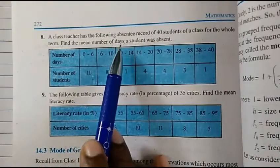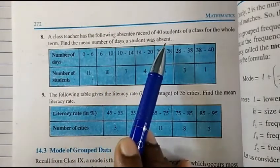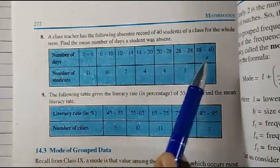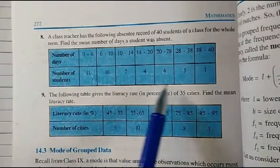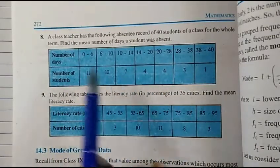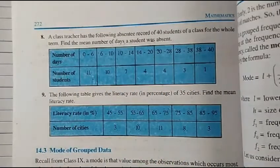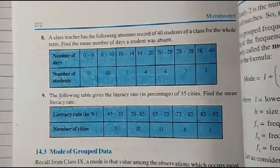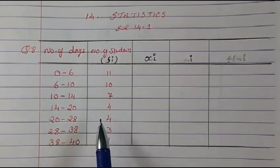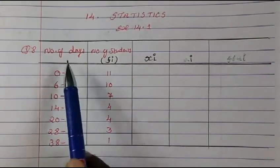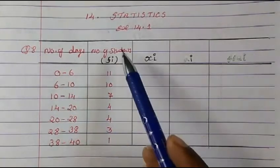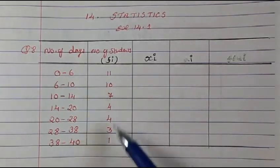The number of days a student was absent is given, and the number of students is given. Let's put this data in columns as given — number of days and number of students.